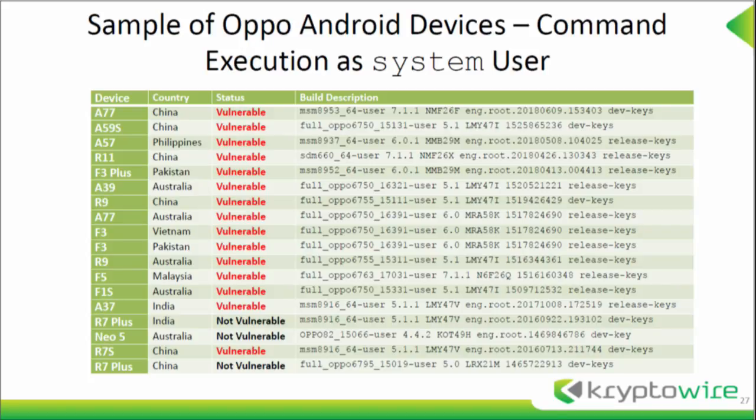They use an OZIP format which is encrypted — we were able to get some of them but not all. This table is ordered chronologically with most recent first.